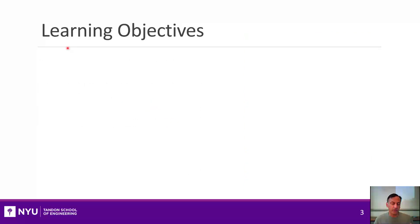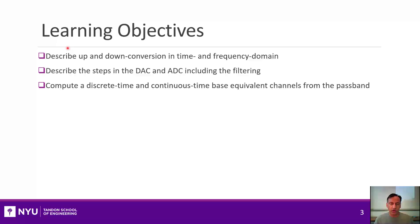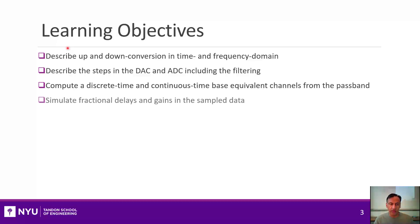A lot of this unit will be basically review, because once we recall how to model wireless channels through the front end of a transceiver, multipath fading is actually quite easy to describe. We'll cover how to simulate up and down conversion in the time and frequency domain, how to simulate the A-to-D and D-to-A conversion at the receiver and transmitter, both in discrete time and continuous time, and the effects of fractional delays and gains in the sampled channel.